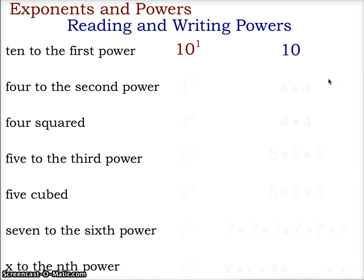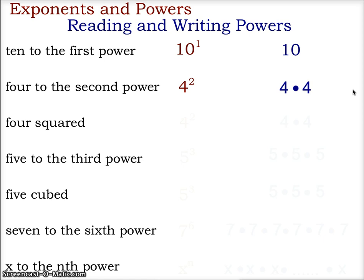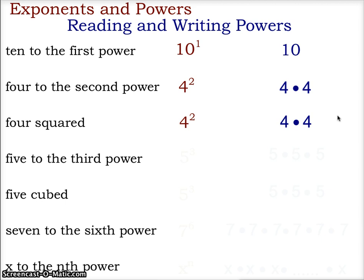For our second example, 4 to the second power: our base number is 4 and our exponent is 2, the second power. This tells us that we are going to multiply two fours together — 4 times 4. When you have 4 to the second power, or any number to the second power, that is the same as saying 'squared.' So 4 squared would also be represented as 4 to the second power, giving us 4 times 4.